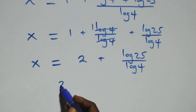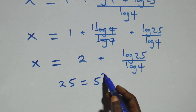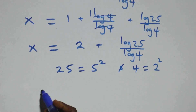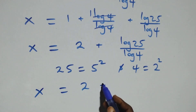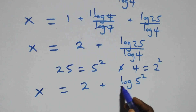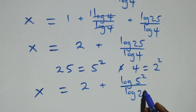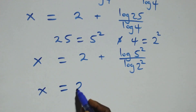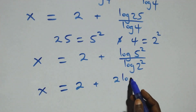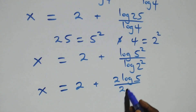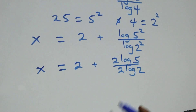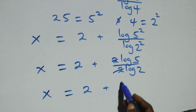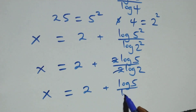Now, 25 is 5 times 5, that's 5 squared, and 4 is 2 times 2, that's 2 squared. So x equals 2 plus log 5² over log 2². Applying the power log rule, the 2s come out: x equals 2 plus 2 log 5 over 2 log 2. The 2s cancel, giving x equals 2 plus log 5 over log 2.